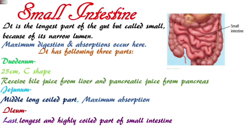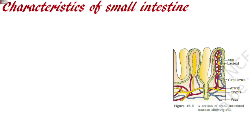The jejunum is the highly coiled portion of the small intestine, and the ileum is the longest part and the last part. So we have discussed the overview of the small intestine. Now we are going to discuss the characteristics of the small intestine. In the small intestine, there are structural qualities that aid digestion and absorption. There will be some modifications to the mucosal layer.